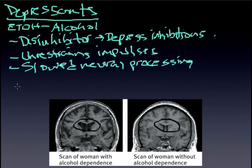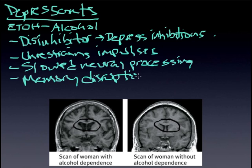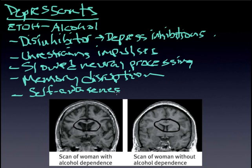You have memory disruption, so either the person won't remember — in more extreme cases of alcohol intoxication they may black out altogether. This is partly because of the impact of alcohol on the brain itself and the memory system, even in the limbic system. Self-awareness and self-control are also impacted. You see people do things they would never do in real life because of alcohol — self-control and impulsiveness follow suit.